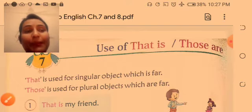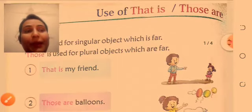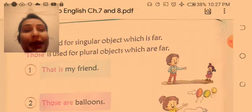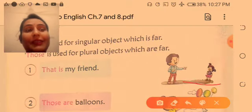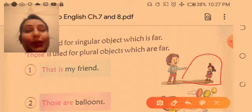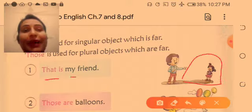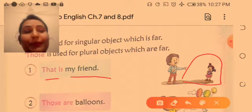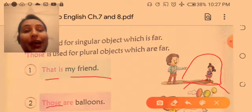Now you can see some examples. My friend, there is only a single person, so that is my friend. Balloons, watch, balloons. It means more than one, so those are balloons.